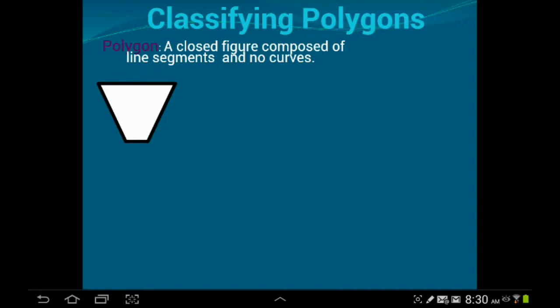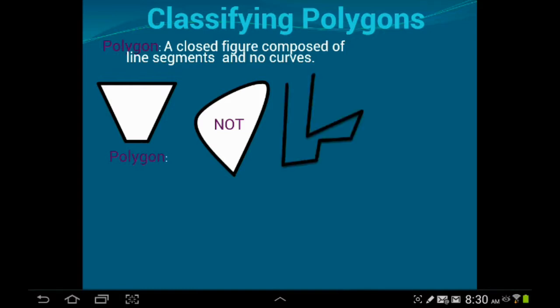So this shape right here would be considered a polygon. It's closed. It's made up of line segments. And this would not be considered a polygon. It's definitely closed, but it's not made up of line segments. Right here, this is definitely made up of line segments, but it's not closed. So you can't technically call it a polygon.